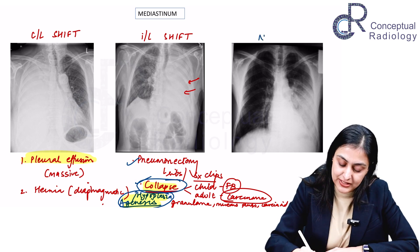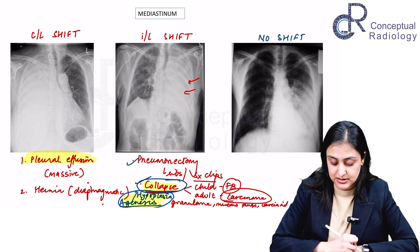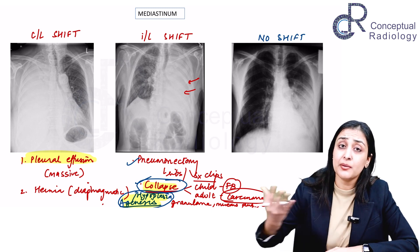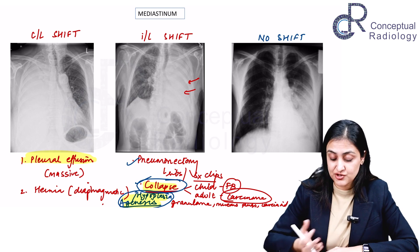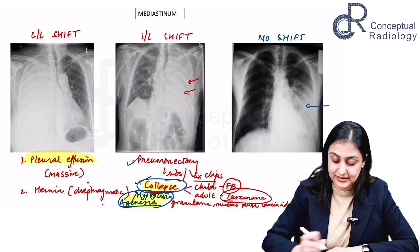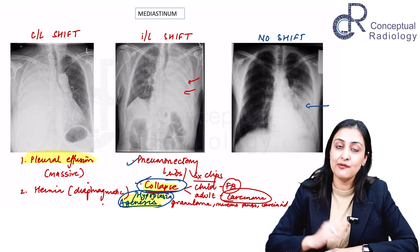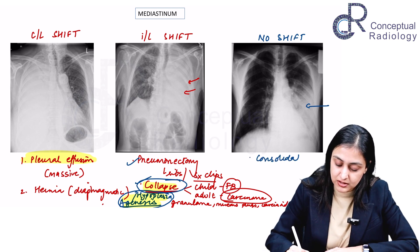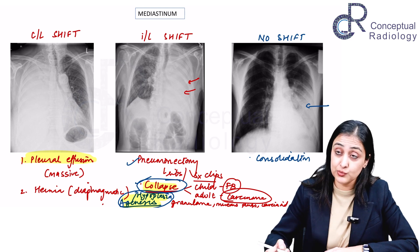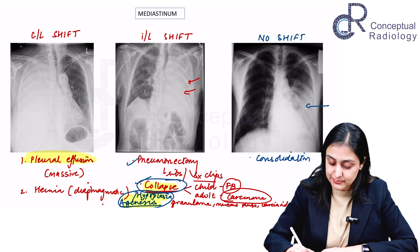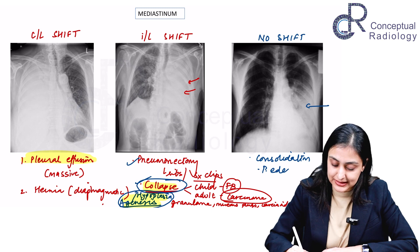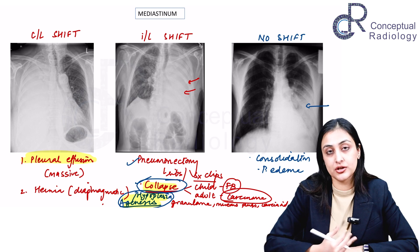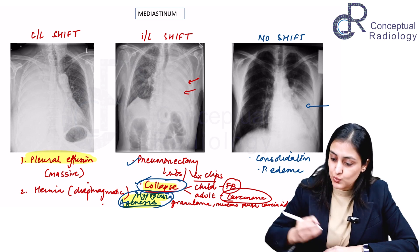Moving to cases with no mediastinal shift: complete opacification with no shift is relatively uncommon, but you may see a lower-lobe opacification with no mediastinal shift. In these cases, consider consolidation — which could be pneumonia or pulmonary edema — where there is no mediastinal shift because it is alveolar opacification.